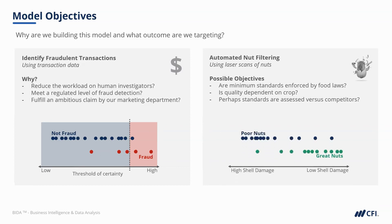Generally, poor quality nuts have high shell damage and high quality nuts have low shell damage. But there are exceptions, so where should we place the cutoff? Set the threshold too high and we absolutely ensure the standards of quality, but then we also reduce the pool of nuts that can be sold.